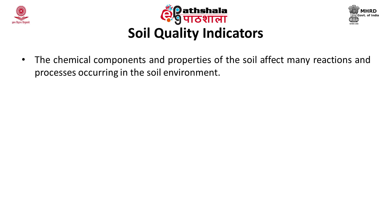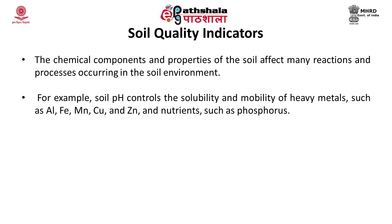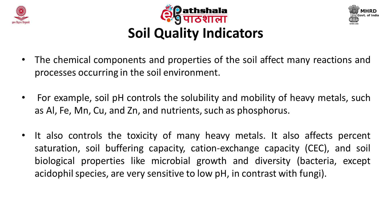The chemical components and properties of soil affect many reactions and processes occurring in the soil environment. For example, soil pH controls the solubility and mobility of heavy metals such as aluminum, iron, manganese, copper, zinc and nutrients such as phosphorus. It also controls the toxicity of many heavy metals. It also affects cation exchange capacity and soil biological properties like microbial growth and diversity.